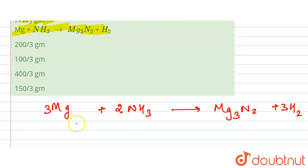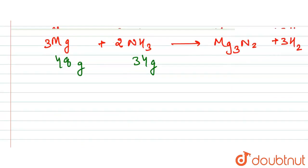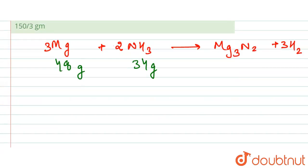Now if we find out the moles, the moles for magnesium will be 48 upon 24 because the atomic weight of magnesium is 24. And for ammonia it will be 17, so it is 34 upon 17, which is also 2.